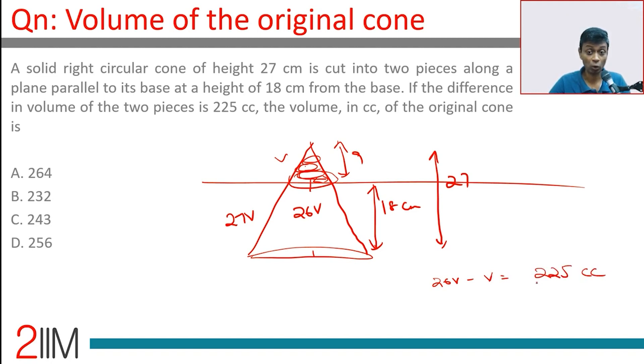The volume in cubic centimeters of the original cone is 27v. What is that? 25v is 225, so v is 9. Therefore, 27 times 9 equals 243.